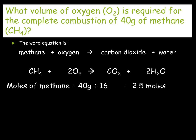So the first thing we need to do is work out our moles of methane. We are given the mass which is 40 and we can work out the MR which is 16. Carbon is 12, each of the hydrogens is 1. 40 divided by 16 gives us 2.5 moles.